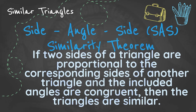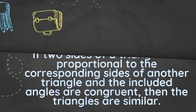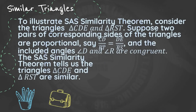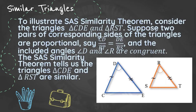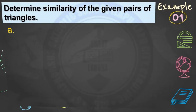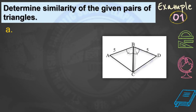The SAS similarity theorem states that if two sides of a triangle are proportional to the corresponding sides of another triangle and the included angles are congruent, then the triangles are similar. To illustrate, consider triangles CDE and RST. If two pairs of corresponding sides are proportional and the included angles D and R are congruent, then by SAS similarity theorem, triangle CDE and triangle RST are similar.